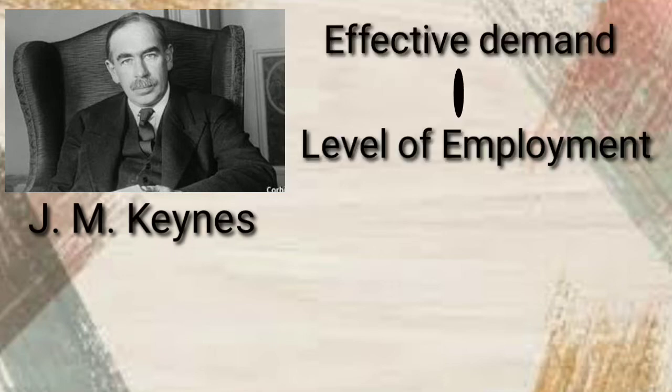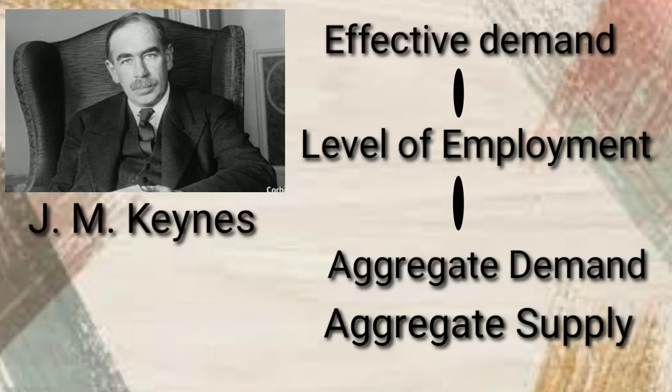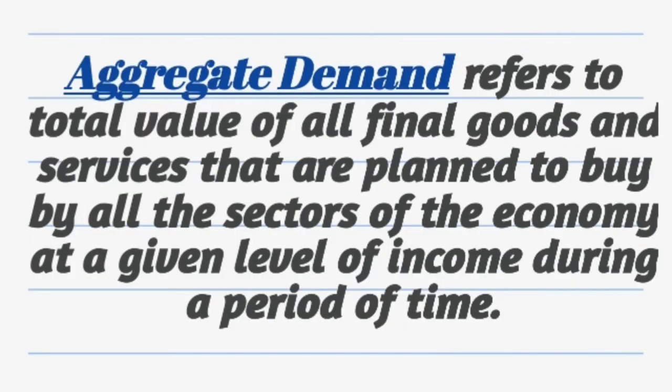Effective demand in short means the total demand is equal to total supply. Before this, we will learn the basic concepts of aggregate demand and aggregate supply so that we don't get confused. Aggregate demand is the total value of all the final goods and services that are planned to buy by all the sectors of the economy at a given period of time.